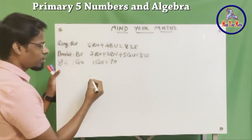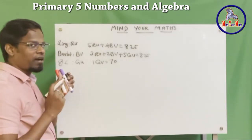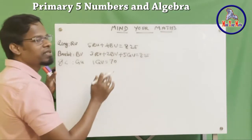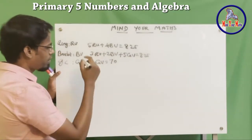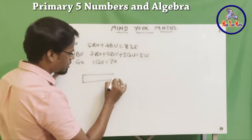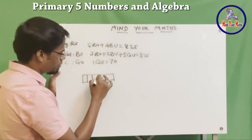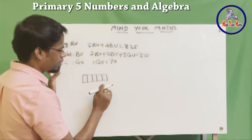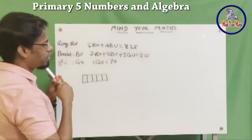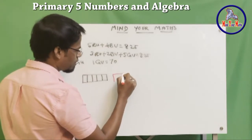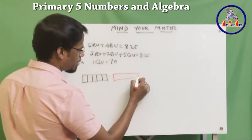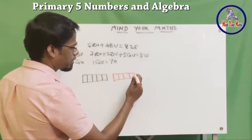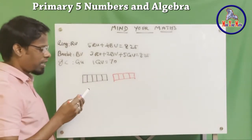Now let's represent this in a model diagram. I will use the same size but different colors, because they are not the same price — they are units, but that doesn't mean they are the same price. I'll use black for the ring unit — five ring units: one, two, three, four, five. Then I'll use red for the bracelet — four bracelet units: one, two, three, four.